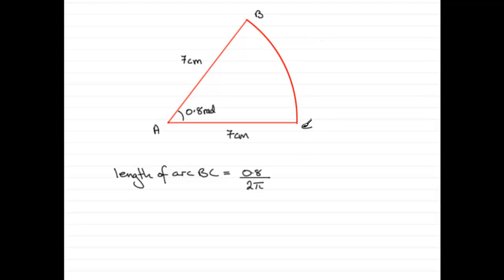That's the part of the circumference of the circle. So it's that fraction of the circumference. You should know that the circumference of a circle is 2π times the radius, so 2π times 7.